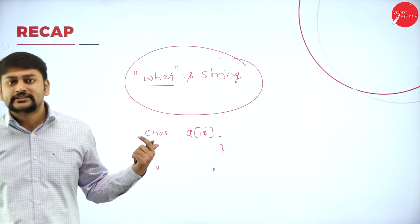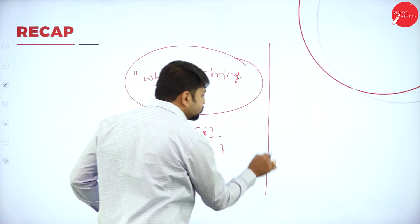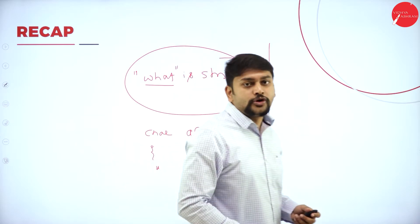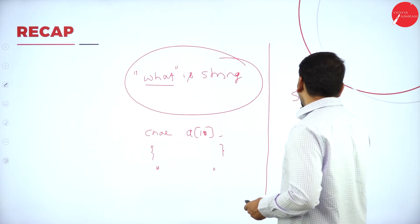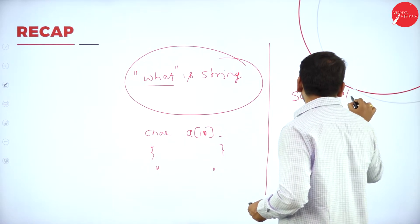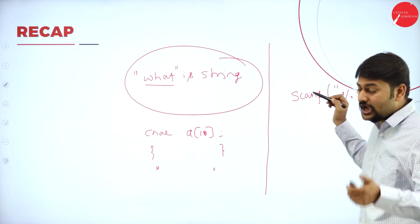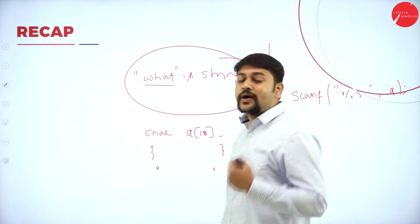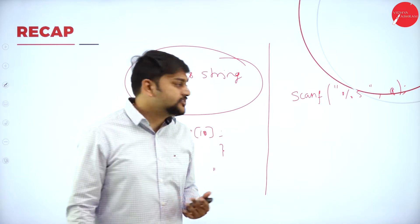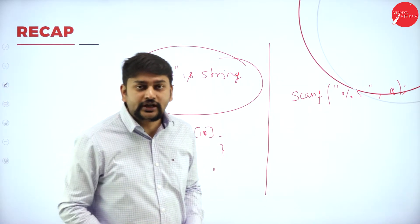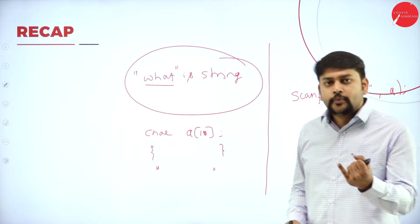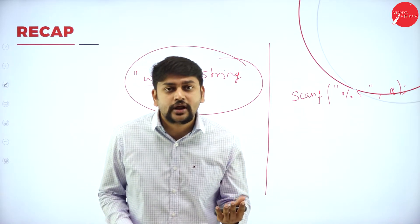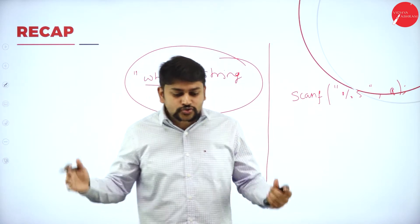We discussed how to read values from the user. In scanf, you use %s and just write the array name — no ampersand needed. Similarly, in printf, you use %s to print the string content. We also discussed gets, puts, and the functions getcat and putcat in our previous session.